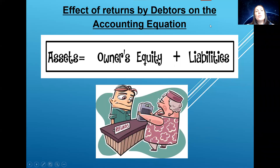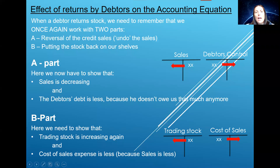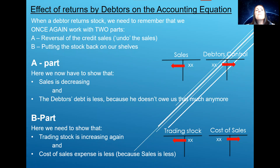In this section, we're going to look at the effect of returns by debtors on the accounting equation. As with the previous explanation when we sold to debtors on account and on credit, I will also explain this one on the whiteboard because I just feel that a little bit more visual effects will make it easier to understand, but I'm going to try my best on the PowerPoint presentation as well.